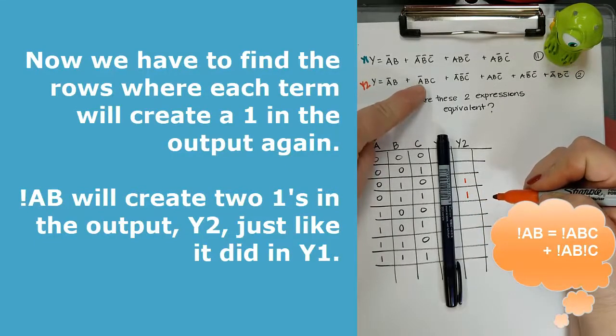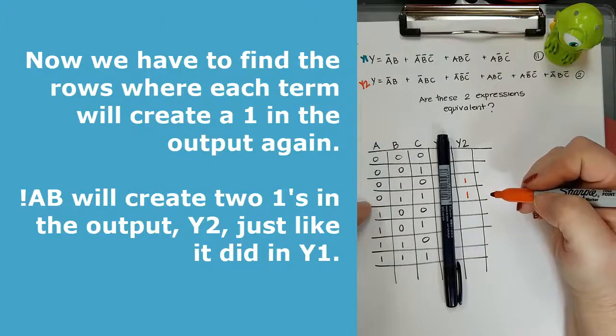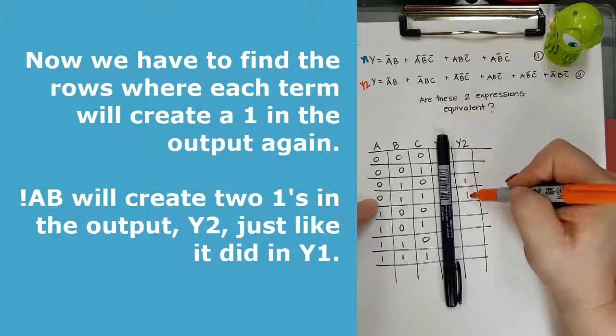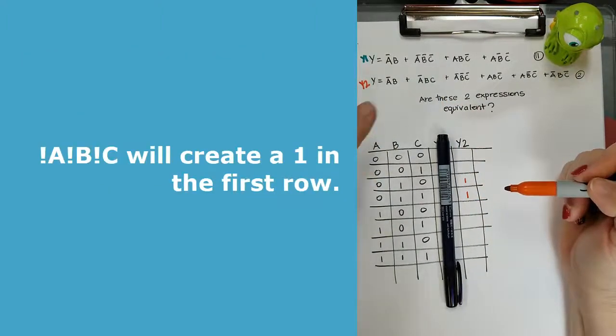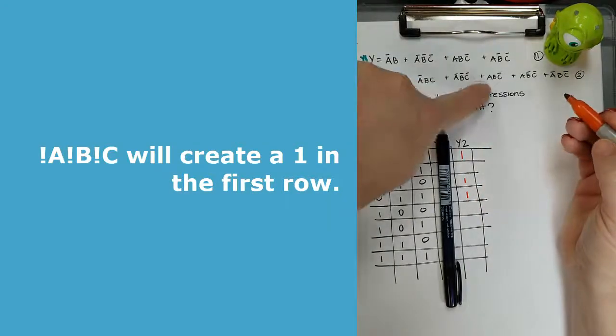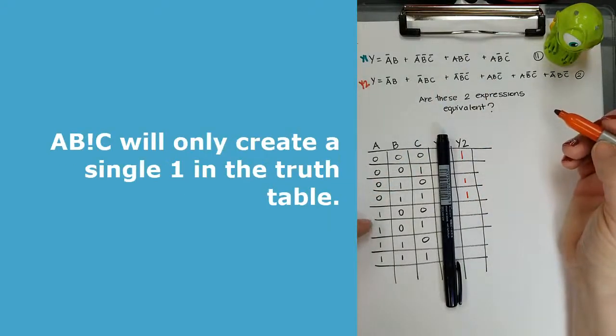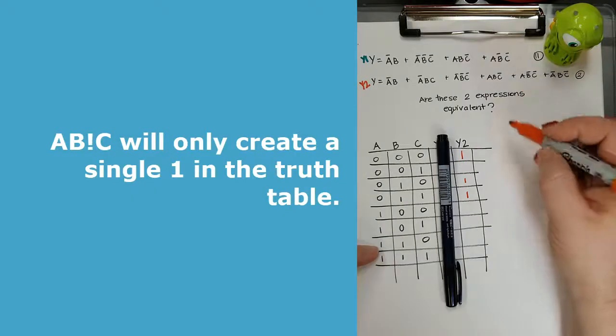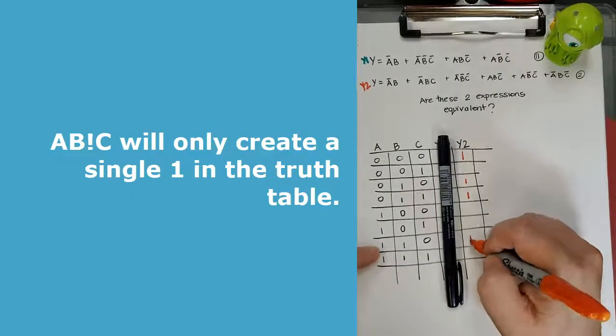And then when I go to not A, B, C, it's a one in one of the already existing places. Now not A, not B, not C puts one in. And then after that, I'll go to the next term.